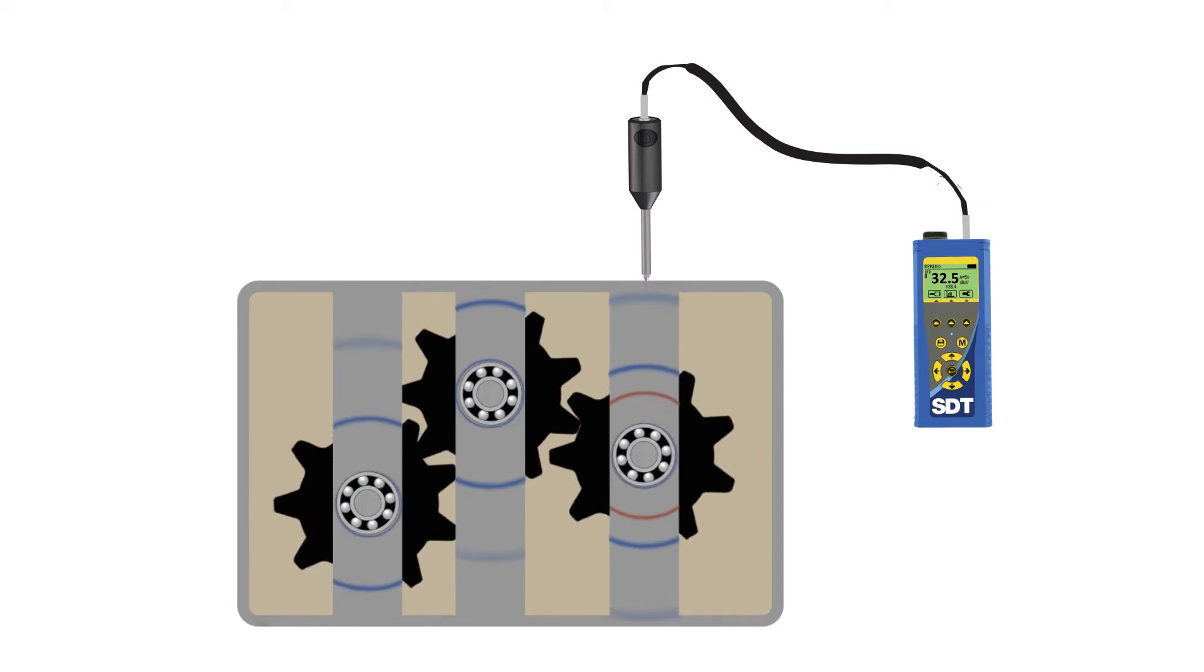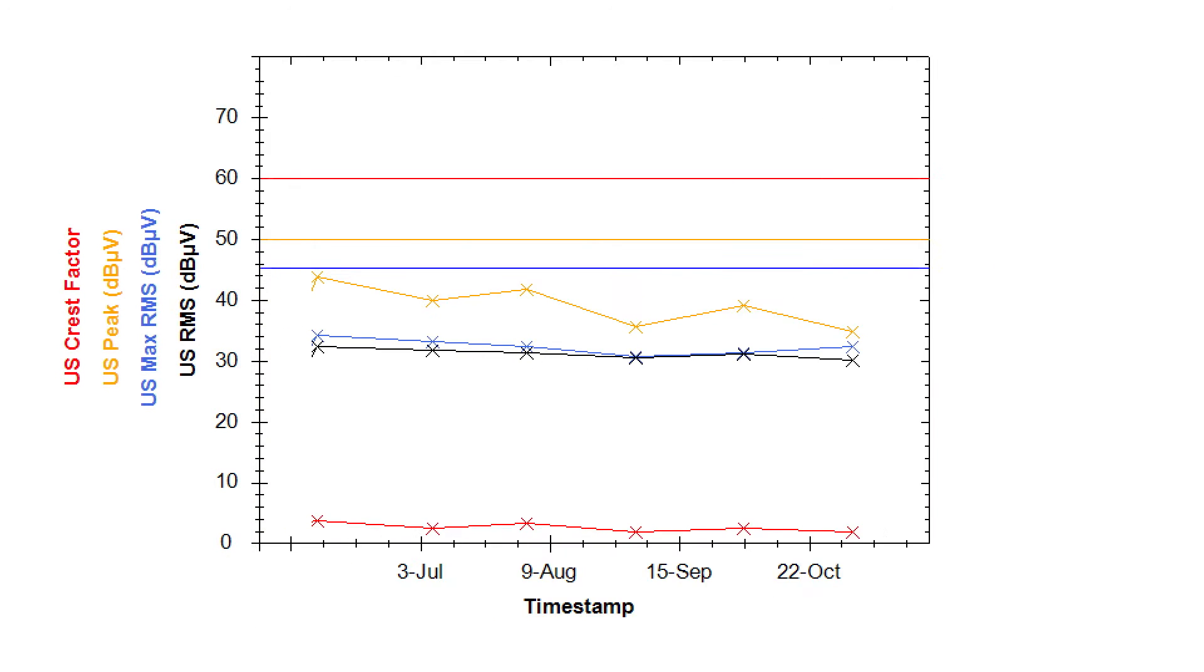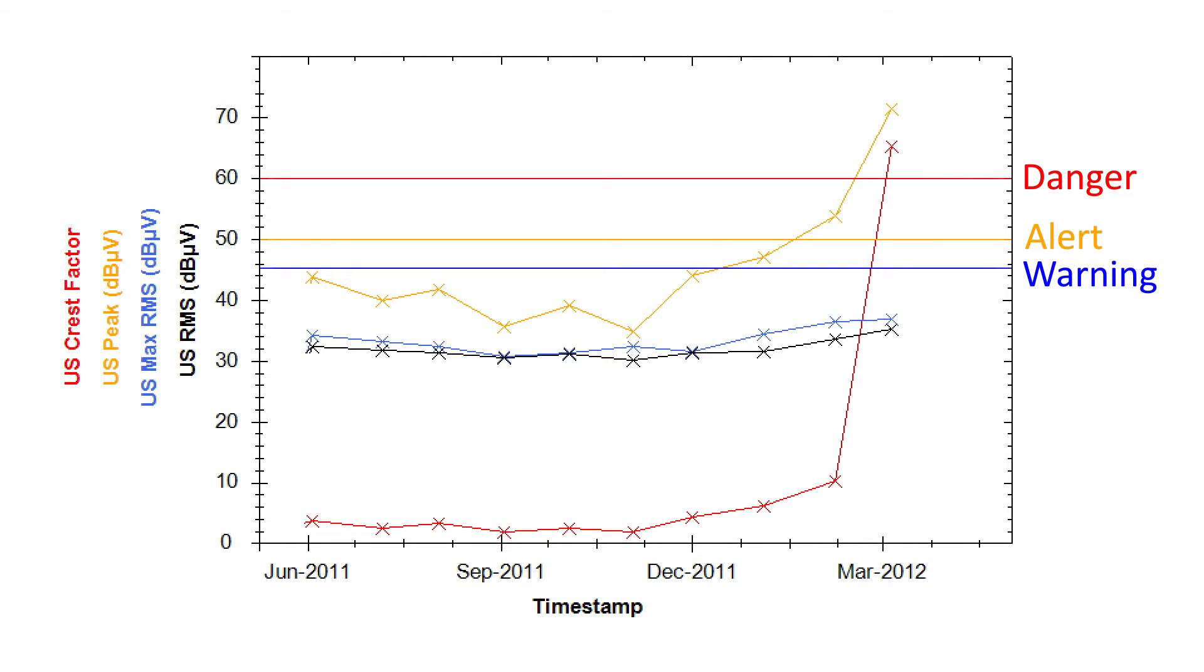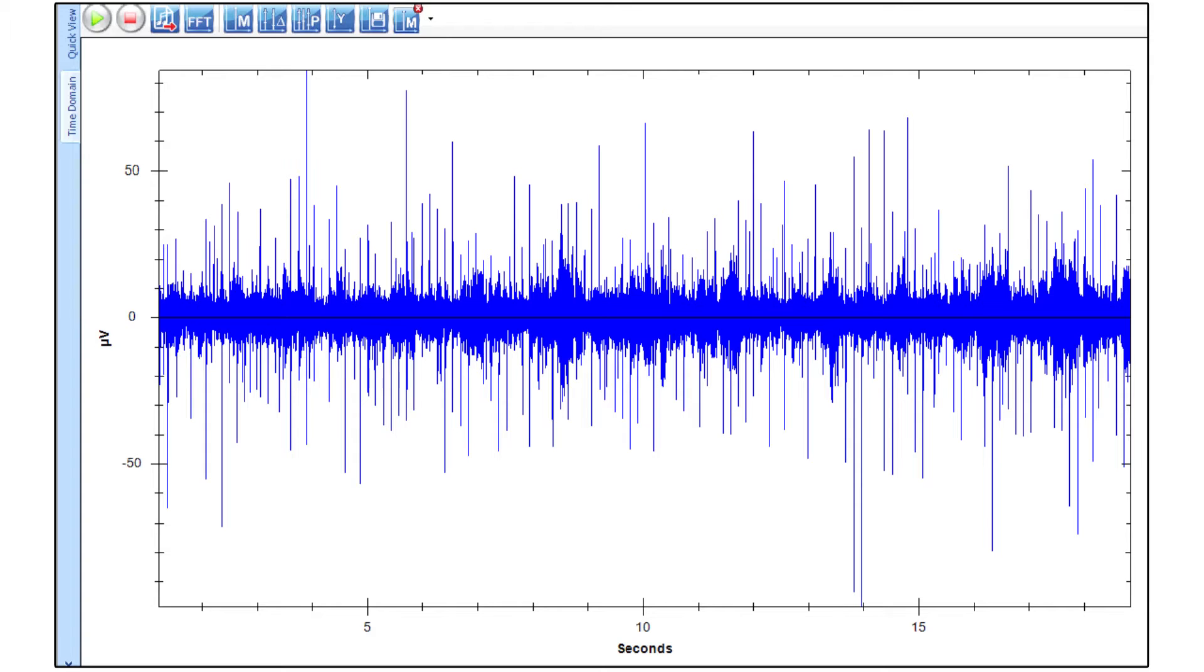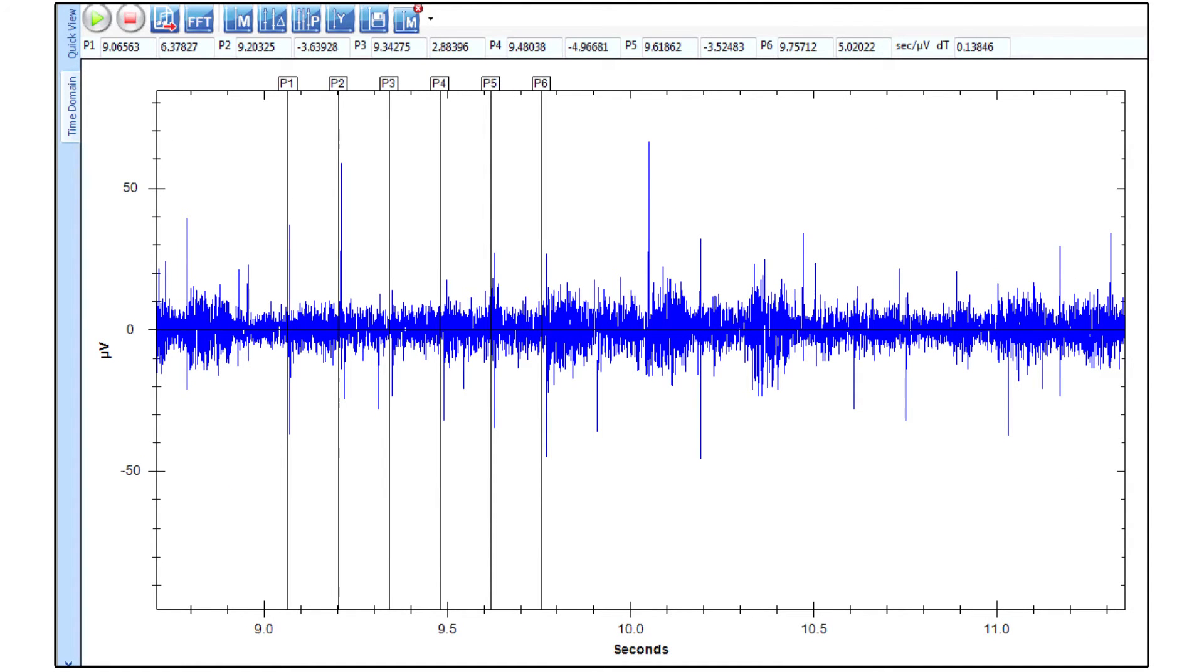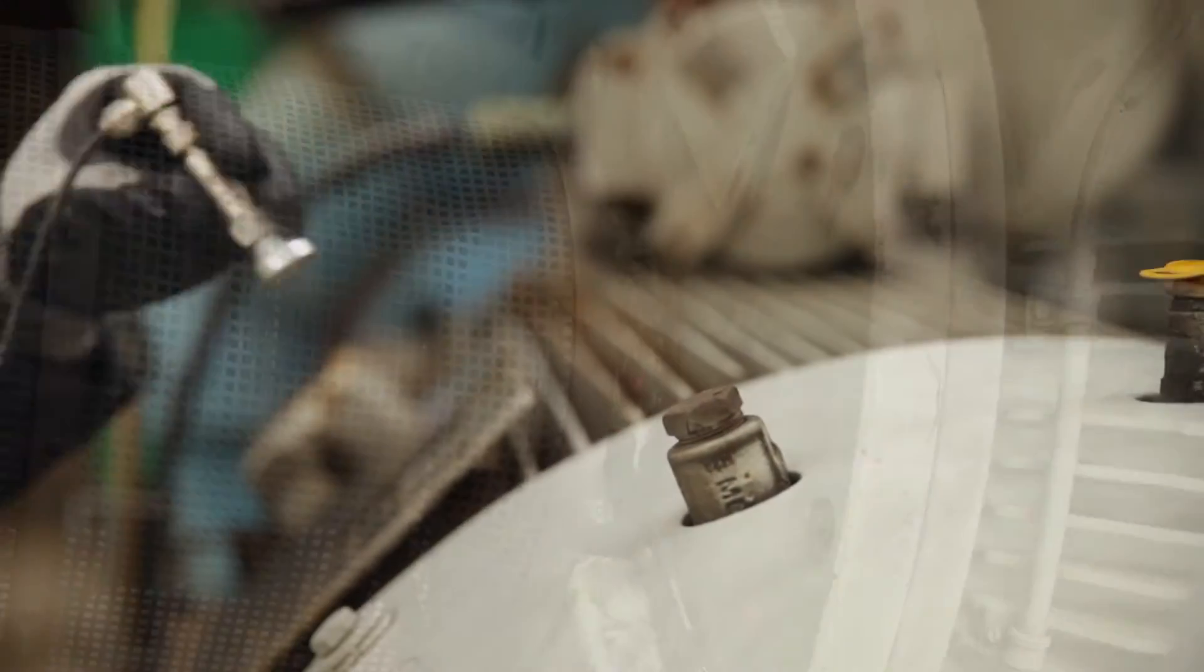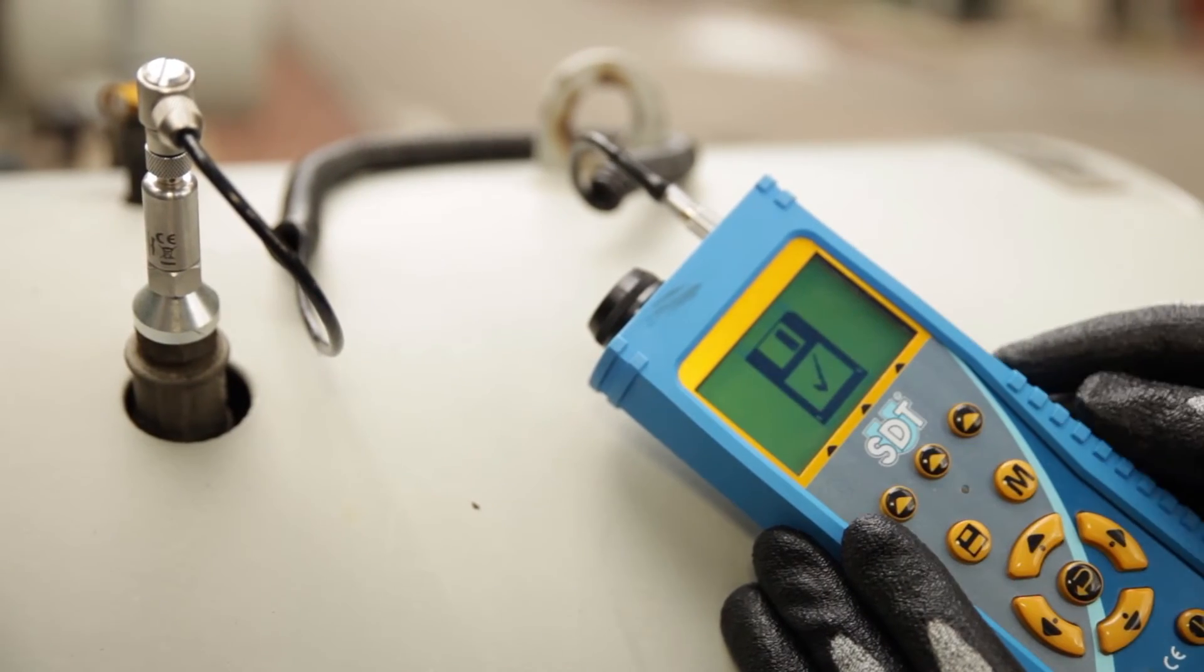Static signals are measured as decibels and trended against previous values and preset alarms. Dynamic signals are recorded and analyzed in the time and frequency domain for in-depth analysis of fault conditions. Temperature, RPM, and vibration data are also collected with the SDT 270 to complete your condition monitoring assessment.